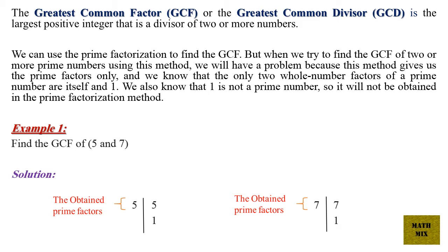Example 1: Find the GCF of 5 and 7. Solution: 5 is divisible by 5, and the result of division is 1. And 7 is divisible by 7, and the result of division is 1.